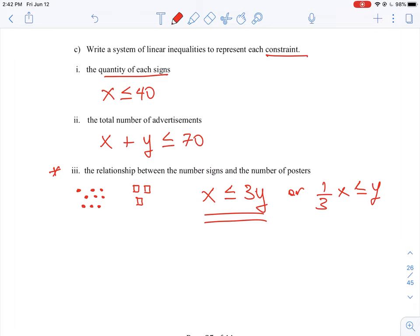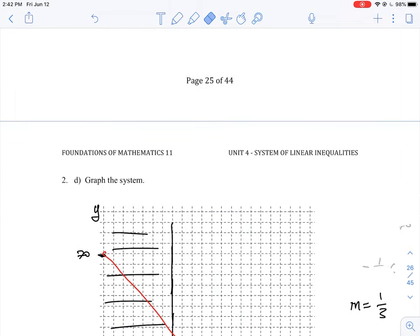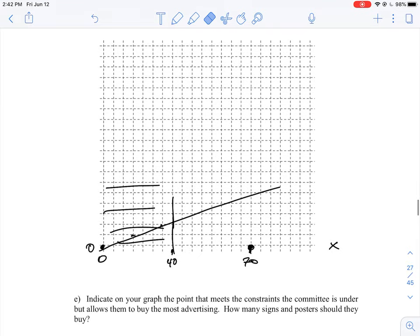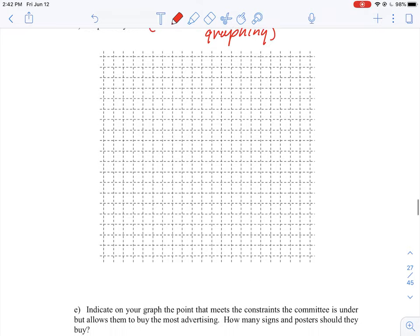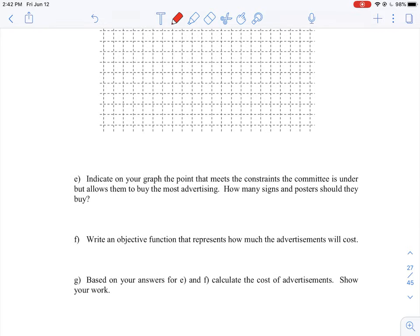So if we go forward here, I'm just going to erase a couple of things here that were from a previous question. Instead of graphing it again, I would use - I'm just going to mark in here, use Desmos to help with graphing. It's a lot easier to use, and you can find coordinates much more accurately, which can be a problem for some students if you're trying to do it manually, especially if the numbers don't work out. And then indicate on your graph the points that meets the constraints the committee is under but allows them to buy the most advertising. So there are four points, and that's what we recorded in from the graph.